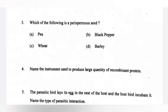Question 3. Which of the following is a perisperm seed? A. Pea, B. Black pepper, C. Wheat, D. Barley. Answer: B. Black pepper.